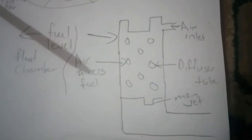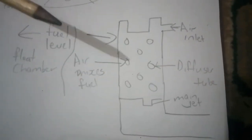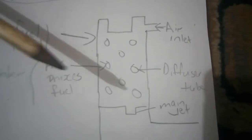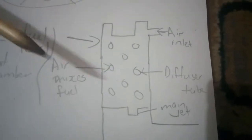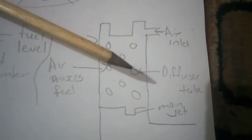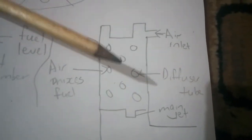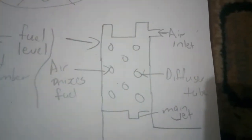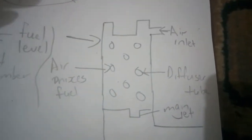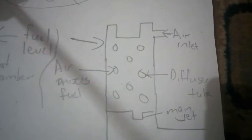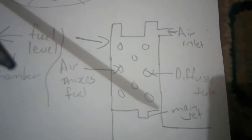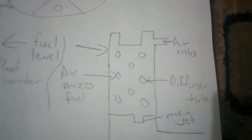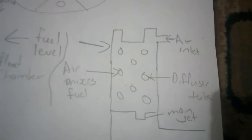Right here we have our diffuser, located in a flow-type carburetor. This helps in maintaining a correct mixture strength over a wide range of engine operations. Without the diffuser, as you increase throttle opening to increase engine RPM,